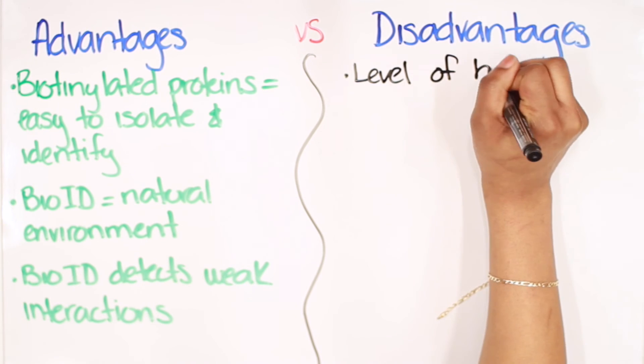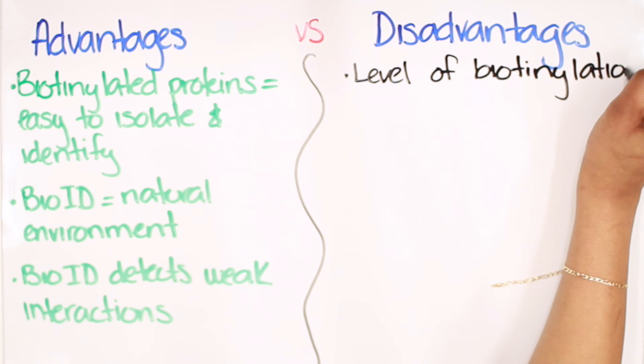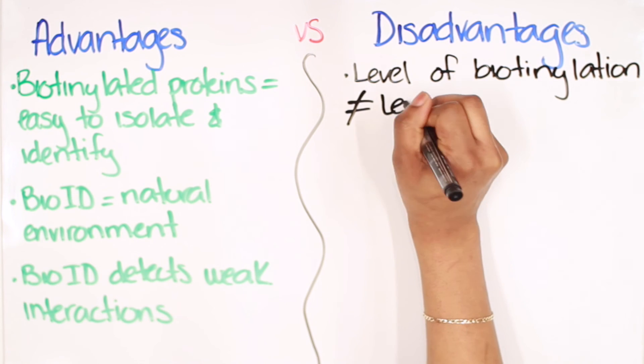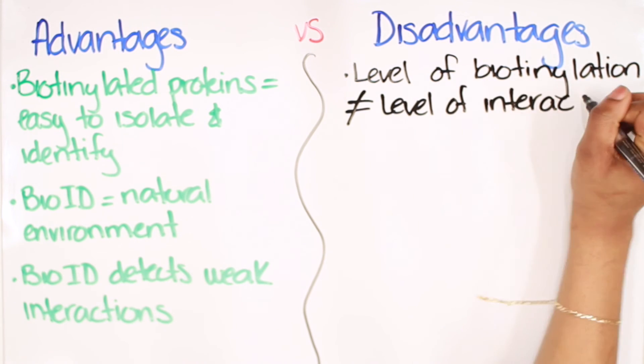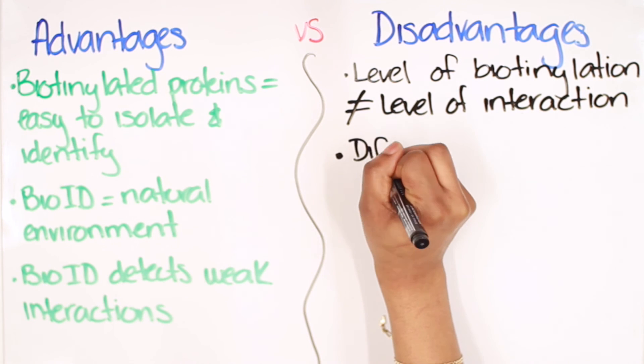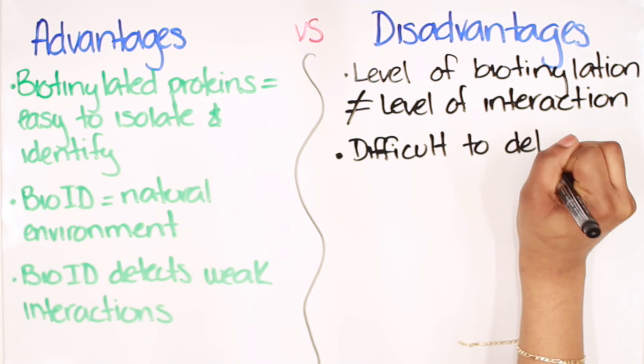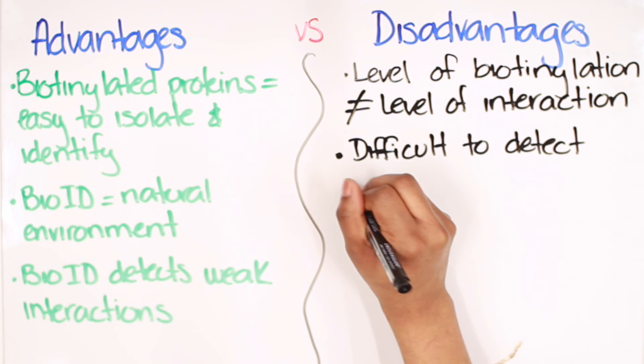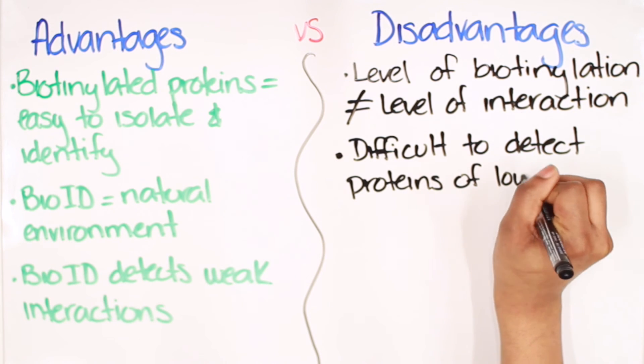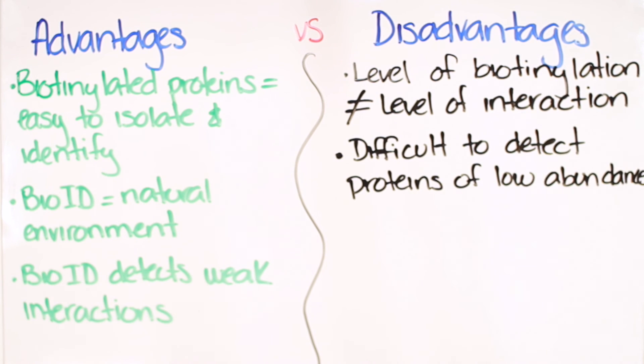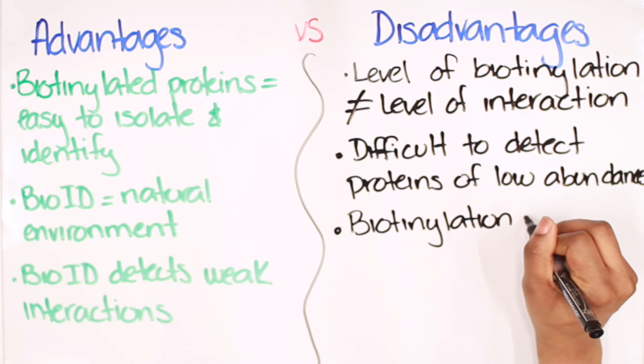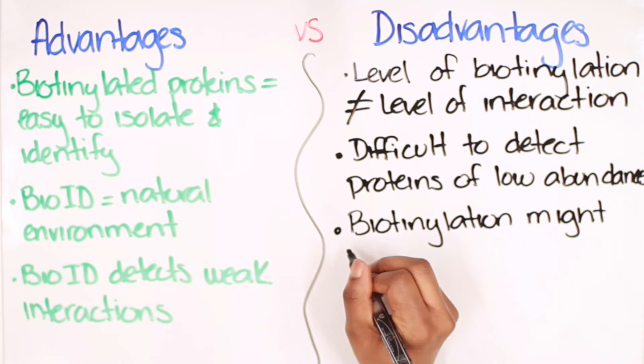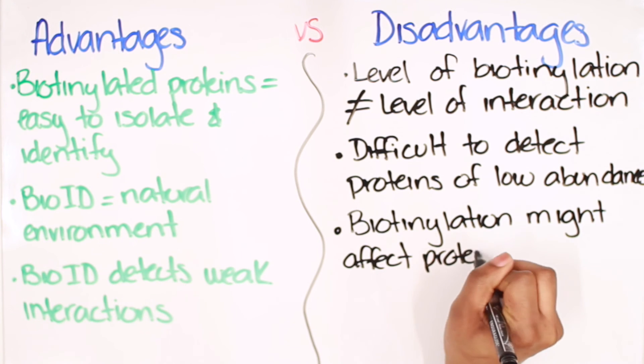However, biotinylation does have its disadvantages. For example, the level of biotinylation of a protein type does not reflect the level of interaction of that protein with the bait. Perhaps that protein just has more or less lysine groups to be biotinylated. Also, low-abundance proteins are really difficult to detect with the BioID technique. And biotinylation is a permanent modification that might change the behavior of some proteins.